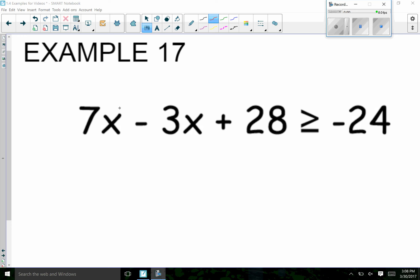So our first step would be to combine like terms since we have the same things on the same side of the inequality. We have 7x minus 3x that gives us 4x plus 28 is greater than or equal to negative 24.